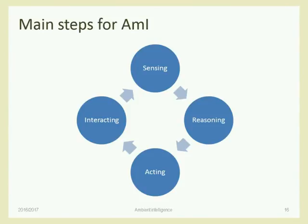The system should be able to sense something — measure something from the world. As a computer system, you need to get information from the environment and from the user through sensors. Then when you get the data, you need to reason about it: what is happening? Given this temperature, presence detection, location and movement information — what does it mean? Does it mean I need to switch the lights on, switch the music off? We need to do reasoning to understand what the data means and what actions to apply on the environment.